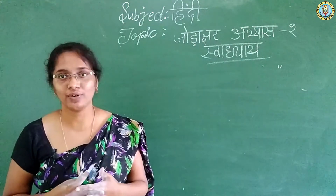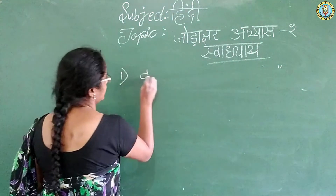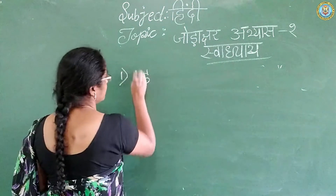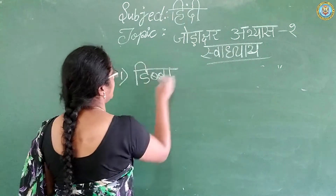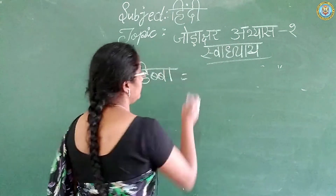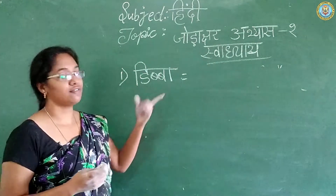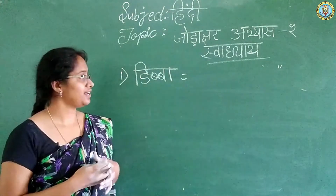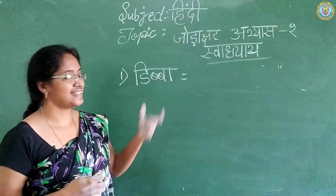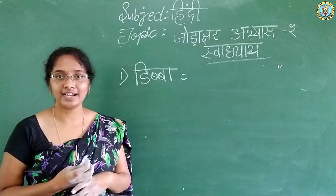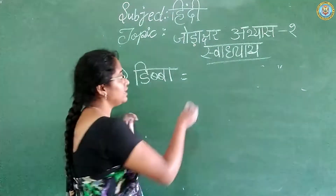It's a Chodakshar exercise. Hello everybody. The first word is Dibba. So in this word, where is the Chodakshar? In this word — Ba, isn't it? Everybody write it down. Ba. Write that.